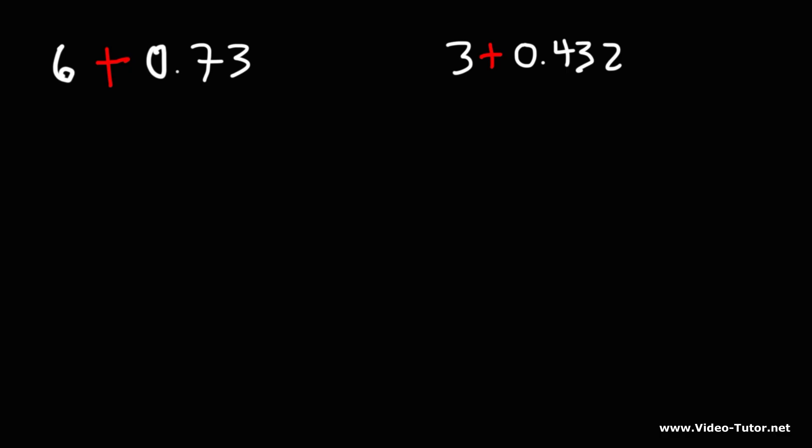The easiest way to get the answer is to add 6 plus 0. If you add the whole numbers part, you can see that it's just 6.73. Same thing for the next one. 3 plus 0.432, if you add 3 and 0, you'll get the answer, which is 3.432.